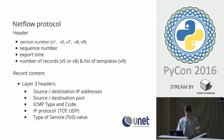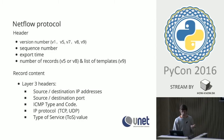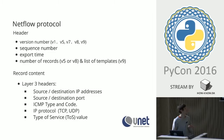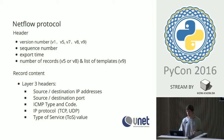NetFlow as a protocol defines how IP flows are exported for processing. It's basically a UDP protocol, and in a header it contains the version number, sequence number, export time, and number of flows.